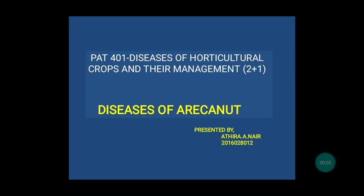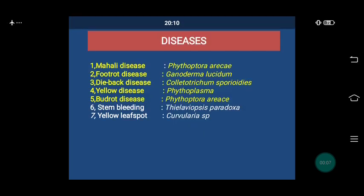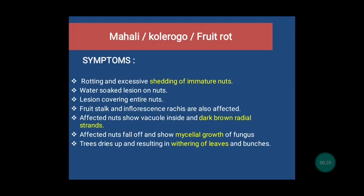Hello friends, today I am going to present a topic of diseases of arecanut. The major diseases include Mahali disease, Fruta disease, Dieback disease, Yellow Leaf disease, and Bud rot disease. The other diseases include stem bleeding and yellow leaf spot. Let's see the diseases one by one.